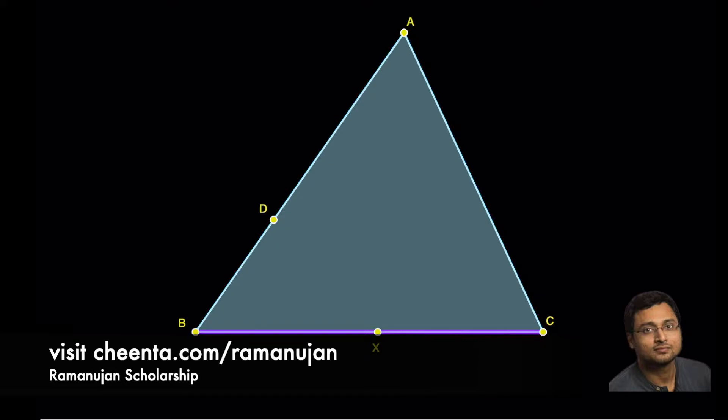Such that the two triangles DXA and CXA have equal area. We want to find such a point X.